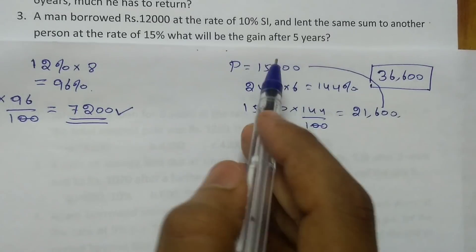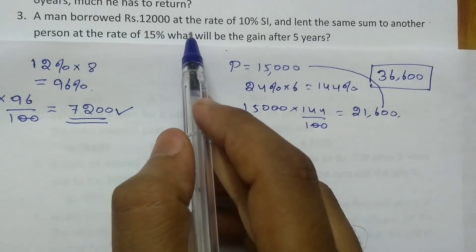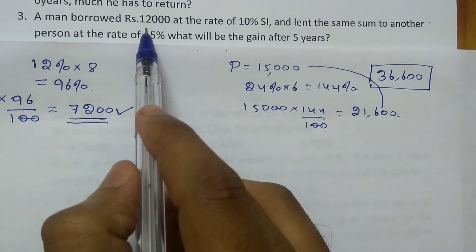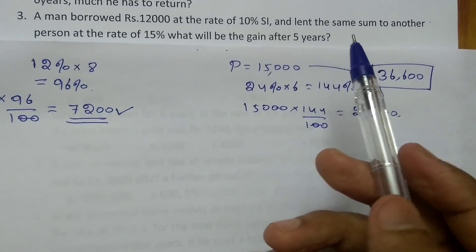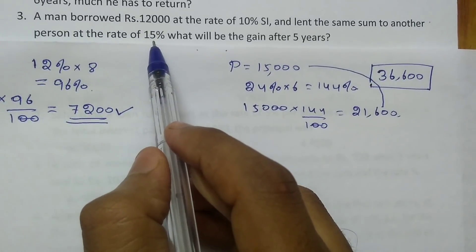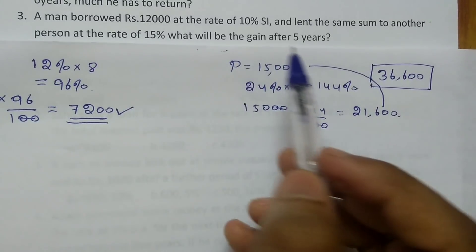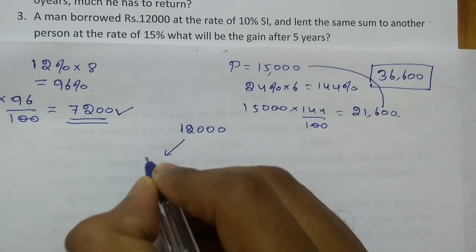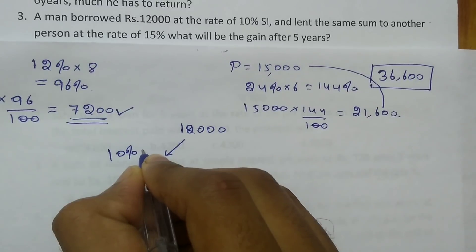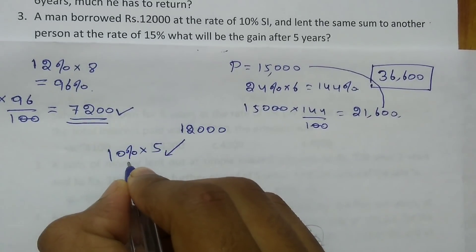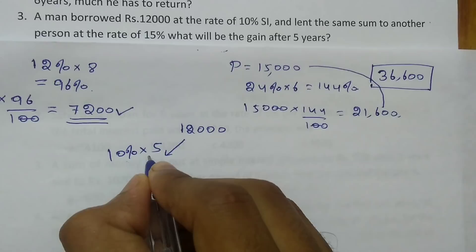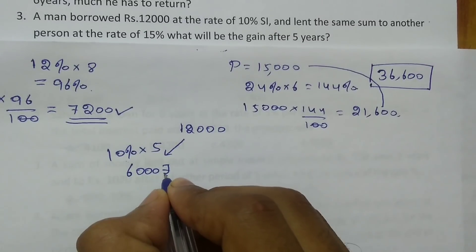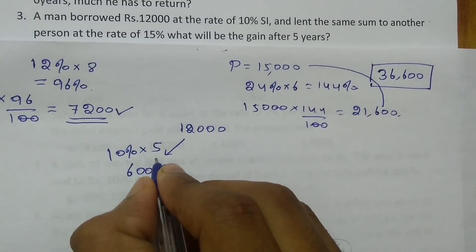You borrow Rs.12000 from the bank and pay 10% simple interest every year. For 5 years, that is 10 into 5 = 50%. So 50% of Rs.12000 is Rs.6000. You have to pay Rs.6000 to the bank at the end of 5 years.